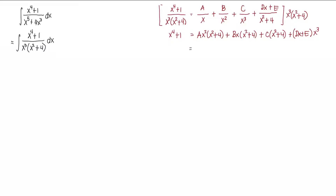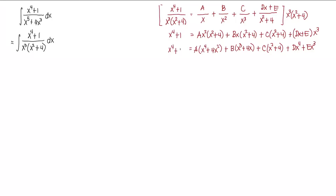Next, expand the polynomial: a(x⁴ + 4x²) + b(x³ + 4x) + c(x² + 4) + dx⁴ + ex³, all equal to x⁴ + 1. Then we equate the coefficients of the variables. The highest degree is 4, then x³, x², x, and lastly the constant.